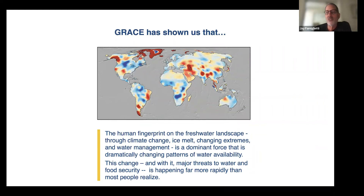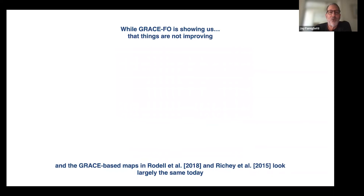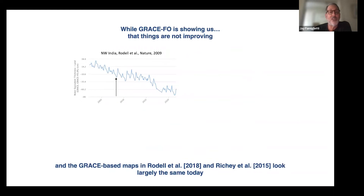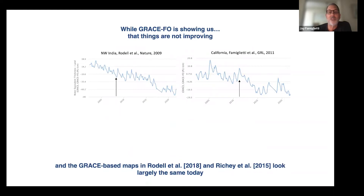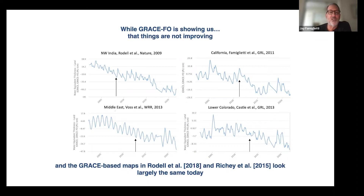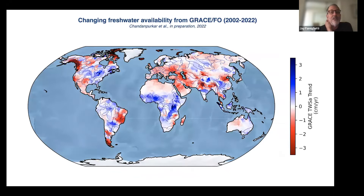We've got to keep working on that and working on our communication and improving our communication skills. GRACE showed us that's happening, and the Follow-On has shown us that things aren't improving. When we publish a paper, that's where the arrow is — and how things just continue on exactly the same downward trajectory. Those trends are not changing, and in some places like California, they're actually getting worse. The trend maps and the aquifer maps look a lot the same, if not a little bit worse.